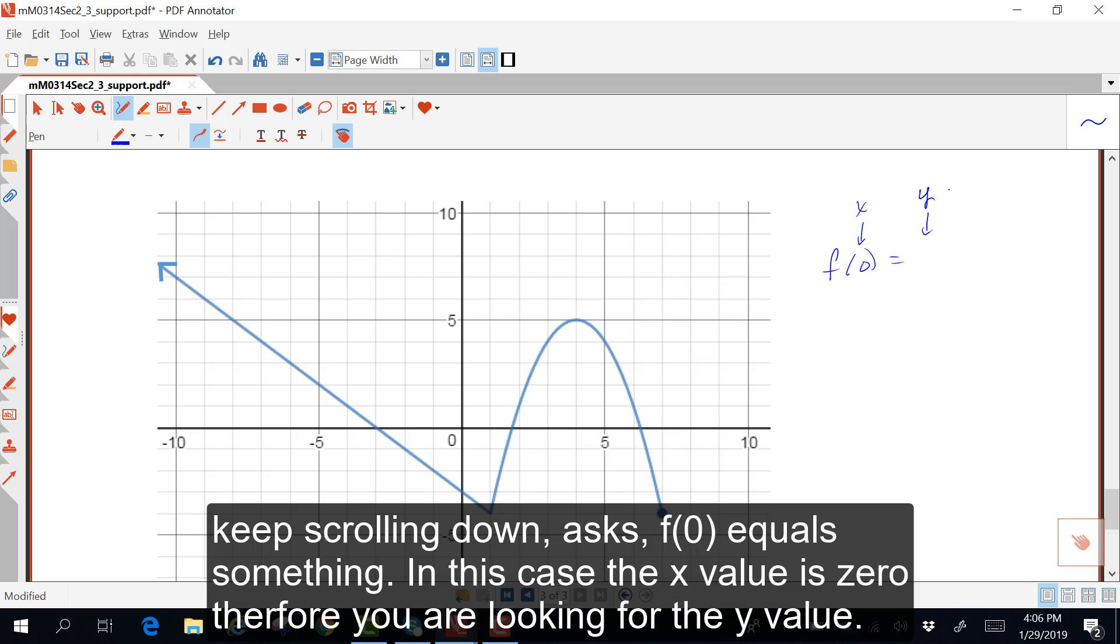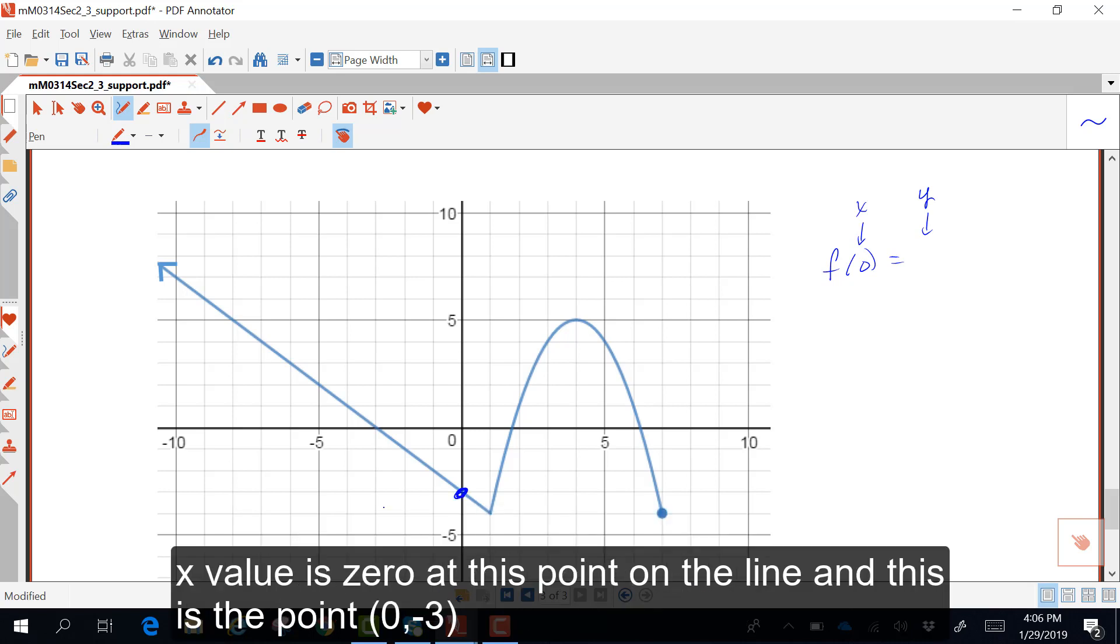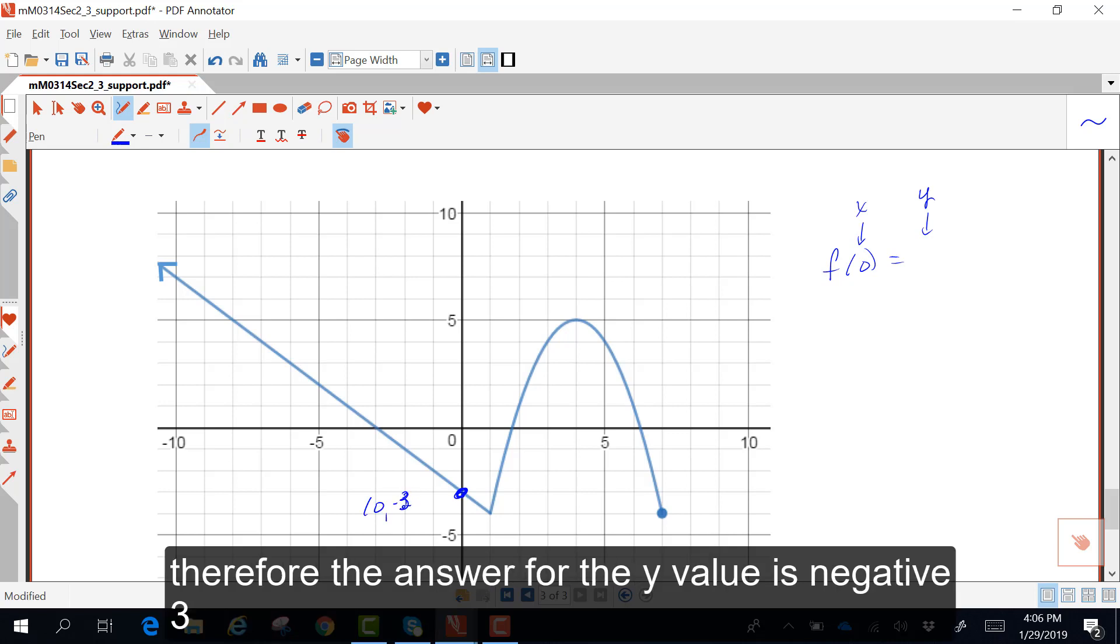Therefore, you are looking for the y value. The x value is 0 at this point on the line, and this is the point 0, negative 3. Therefore, the answer, the y value, is negative 3.